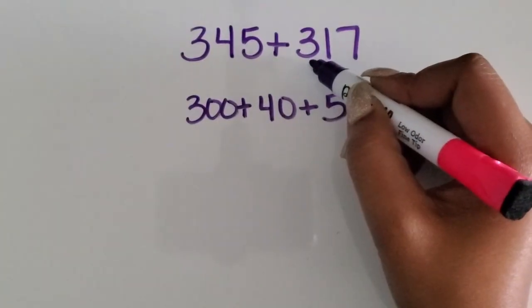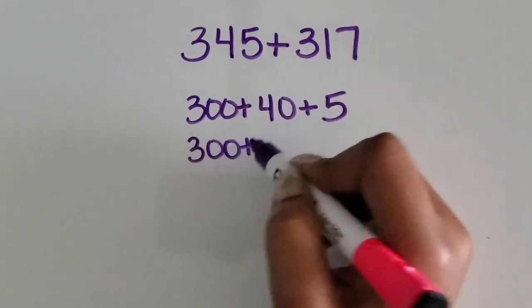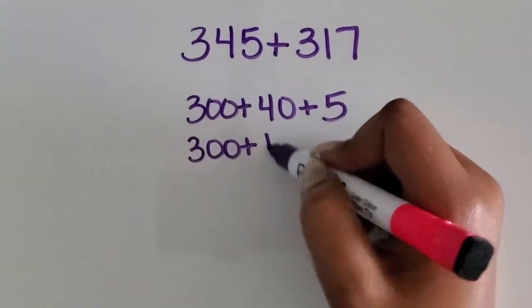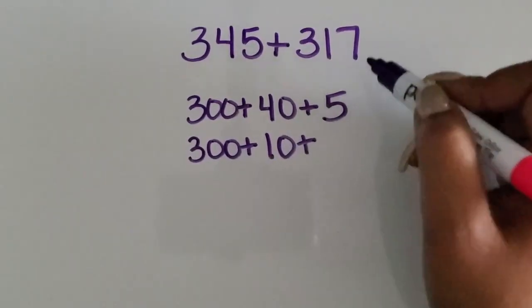The three here is in the hundreds place, so it's 300. The one is in the tens place, so the value is 10. The seven is in the ones place.